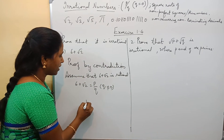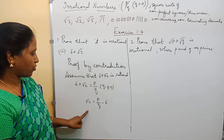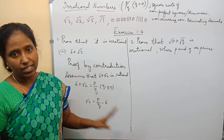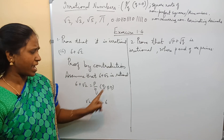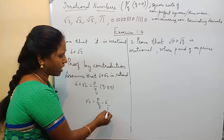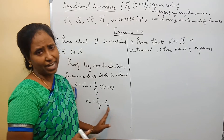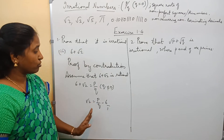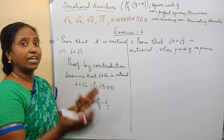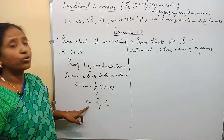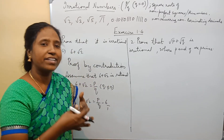In that case, what we will get? Root 2 equals p by q minus 6. Now, p by q minus 6: p by q is the rational number we have taken, and 6 is also 6 by 1, so the denominator is not 0 — it is also rational. So, rational minus rational will give you a rational number. This is showing that root 2 is rational. Whereas, we know for sure root 2 is irrational — it is contradicting the fact.